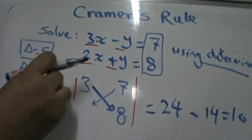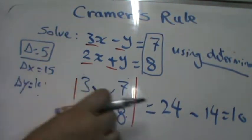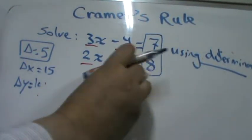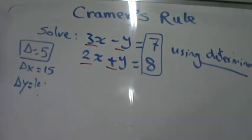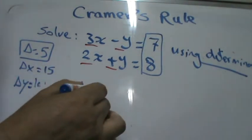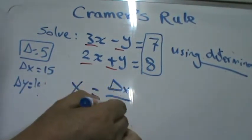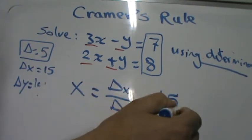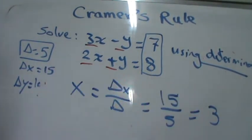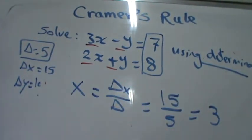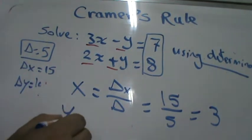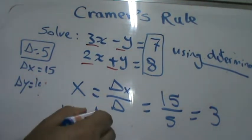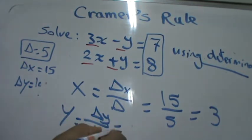After finding delta, delta sub x, and delta sub y, you can get the values of x and y. X equals delta sub x over delta, which is 15 over 5, equal to 3. By the same way, y equals delta sub y over delta, which is 10 over 5, equal to 2.